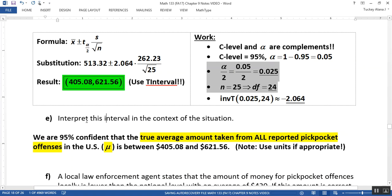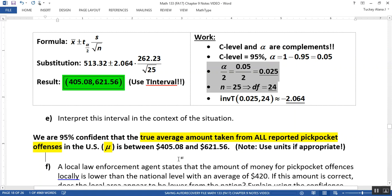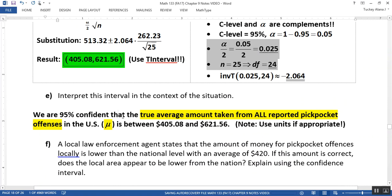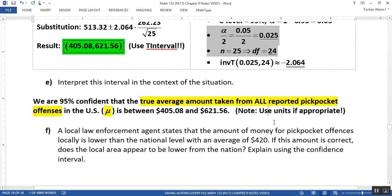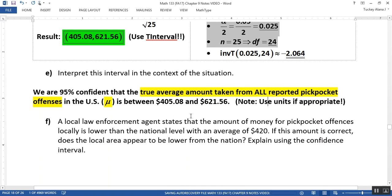Okay, so now how do we interpret that? Well, we are 95% confident that the true average amount of all reported pickpocket offenses, notice it's reported because, of course, most people don't report when they've lost 20 bucks, except for that one guy in the data set, or girl. So, but it's the true average amount of all reported pickpocket offenses. So you have to put in what you're trying to estimate, right, which is your parameter, mu. So you're writing it out in words. Don't just say the mean. The true mean average amount taken from all reported pickpocket offenses is between 405.08 and 621.56. And make sure you use units if appropriate, which in this case it totally is, because this is talking about dollars.